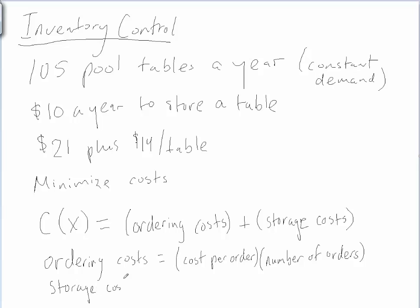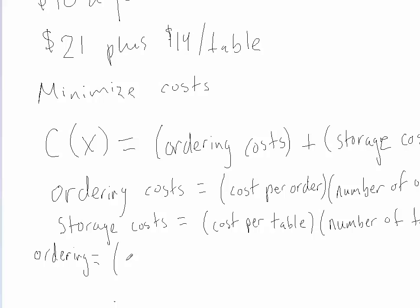So how many orders do I make and how much does it cost per order? And then storage costs, it's going to be equal to cost per table to store and the number of tables that we're going to store. Now, let's put this into numbers. So our ordering costs, each time I order, it's going to be $21 plus $14 times the number of tables in the order. That's the cost per order.